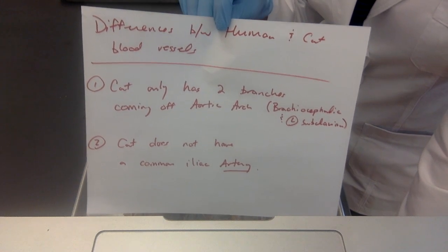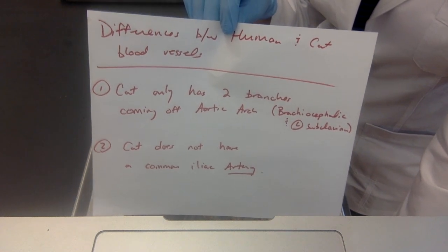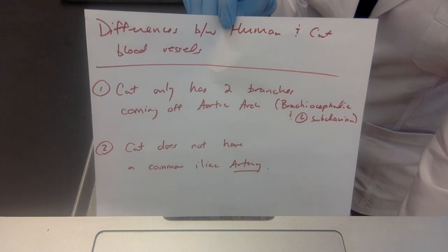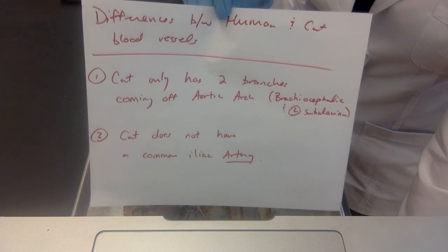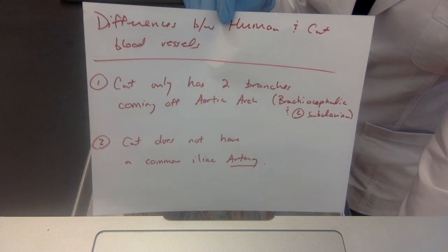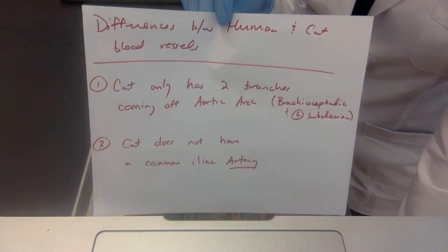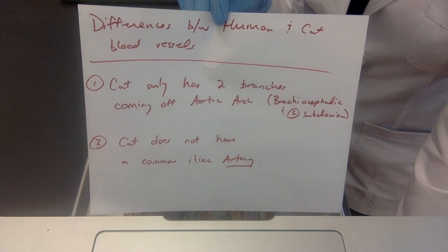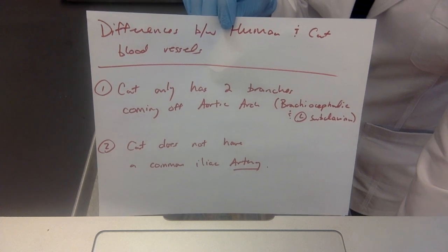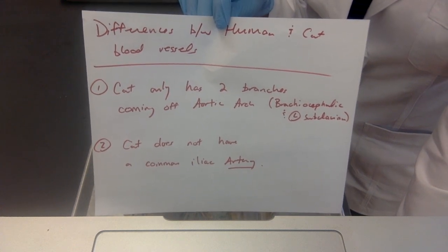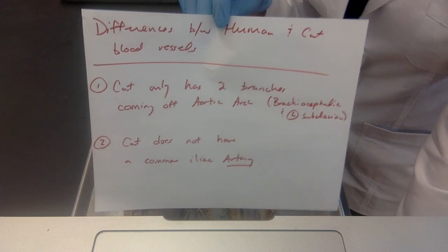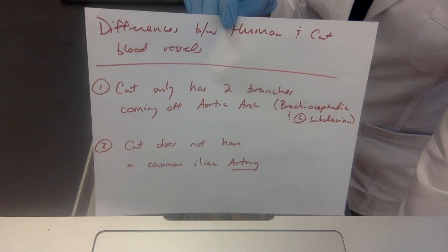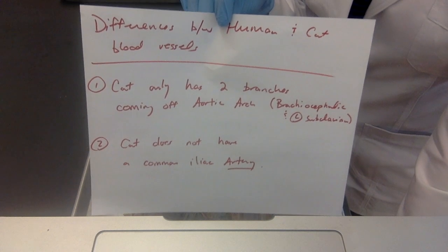Cats do have a left common carotid artery — it just doesn't come off the aortic arch. The other difference is that a cat does not have a common iliac artery. Note: I underlined artery because they do have a common iliac vein. My suggestion would be on cat practical exam day, once you get your answer sheet, write these two things down on the side so you can refer to your own notes.